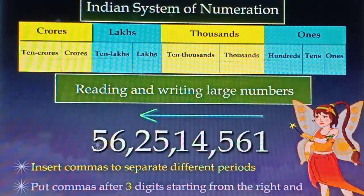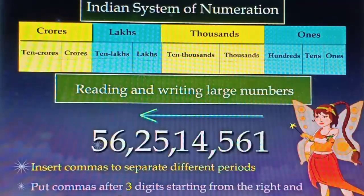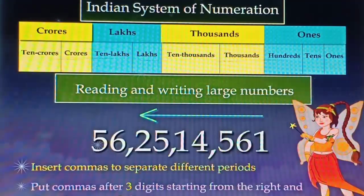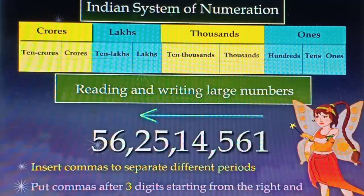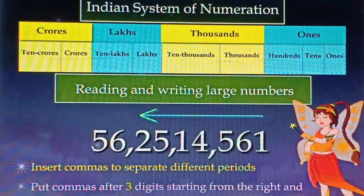Thus, we write the number as shown. Now, we can read the number as 56 crores 25,14,561.